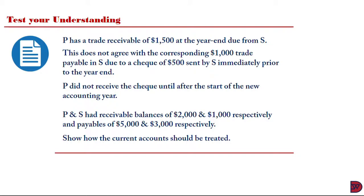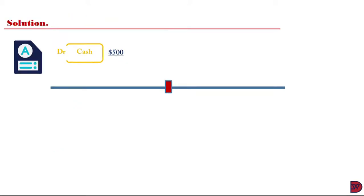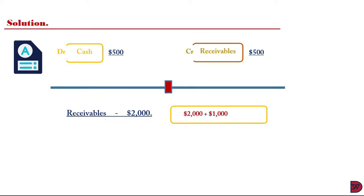As a matter of solution, we debit cash of $500, then we credit receivables with the $500 which is the difference to reduce the receivable balance from S. When we come to the receivables on consolidation, the balance will be $2,000 which will be $2,000 from P, $1,000 from S, then we less the intergroup payable which is the $1,000.